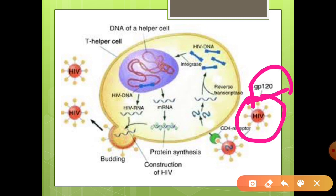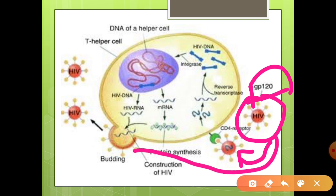This gp120 molecule helps the HIV virus to bind to the CD4 lymphocytes — as I have told you about the pathogenesis, the HIV virus attaches down to our CD4 lymphocytes. So this gp120 molecule helps HIV virus bind to these CD4 lymphocytes and attach to them. After binding, the virus is uncoated and enters into the cell.